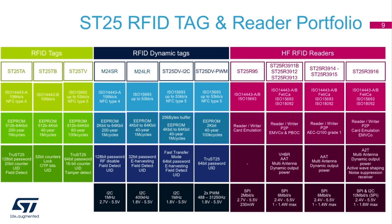The far right of the chart has ST's reader solutions. On the low end you will find the ST25R95, which can be used in very low cost designs. The ST25R39 readers are industry leaders offering high power output for long read range, while also operating with very low power and both capacitive and inductive wake-up modes. The ST25R39 family also features automatic antenna tuning (AAT), which improves performance in harsh environments and reduces overall system design cost.